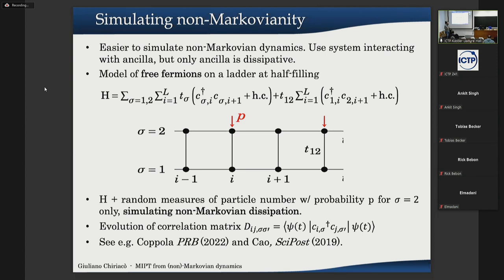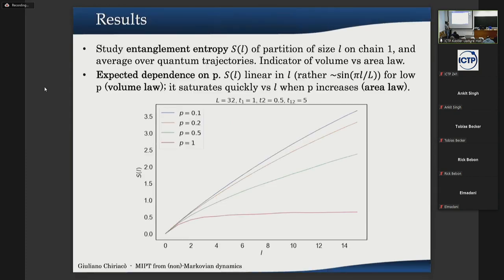Both systems have non-trivial dynamics. In our case we consider two free-fermion chains with hopping parameters on each chain and an inter-chain coupling. The dissipative dynamics — measurements on the second chain — are experienced by the first chain filtered through the dynamics of the second chain. So we go from Markovian dynamics on the second chain to non-Markovian dynamics on the first chain. We are simulating non-Markovianity via coupling to this auxiliary or buffer system. Since we are studying free fermions, we can do everything in terms of correlation matrices.